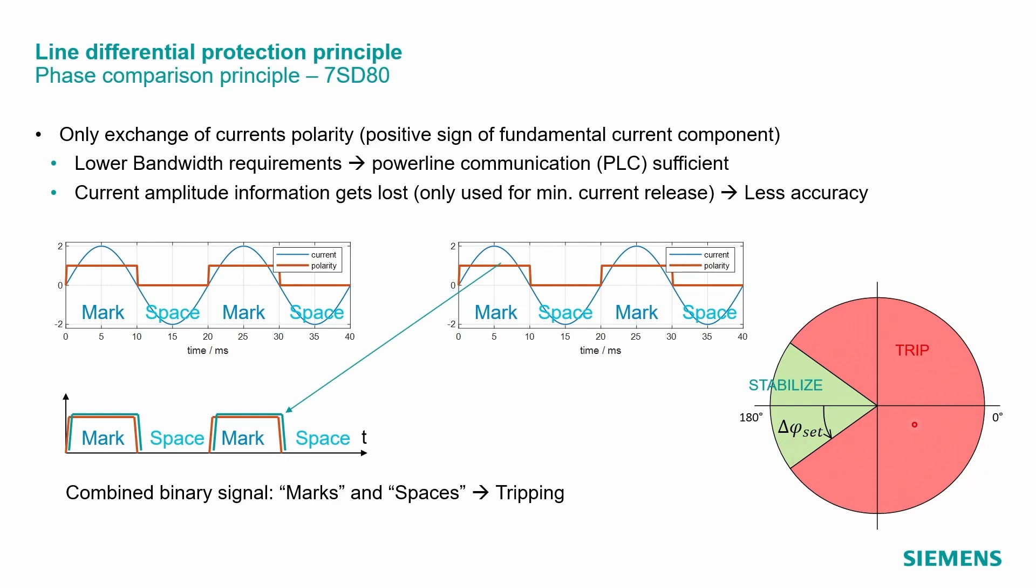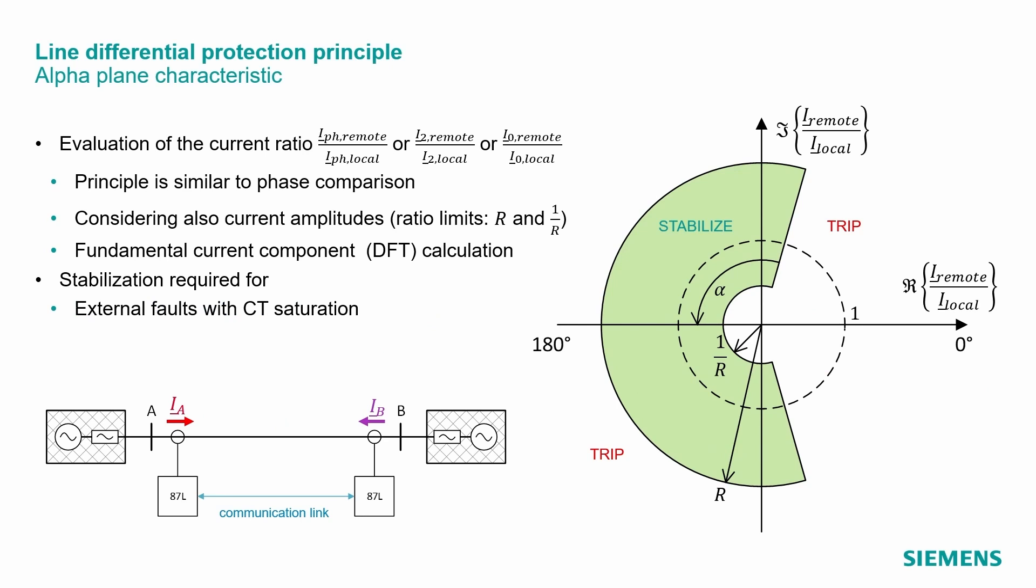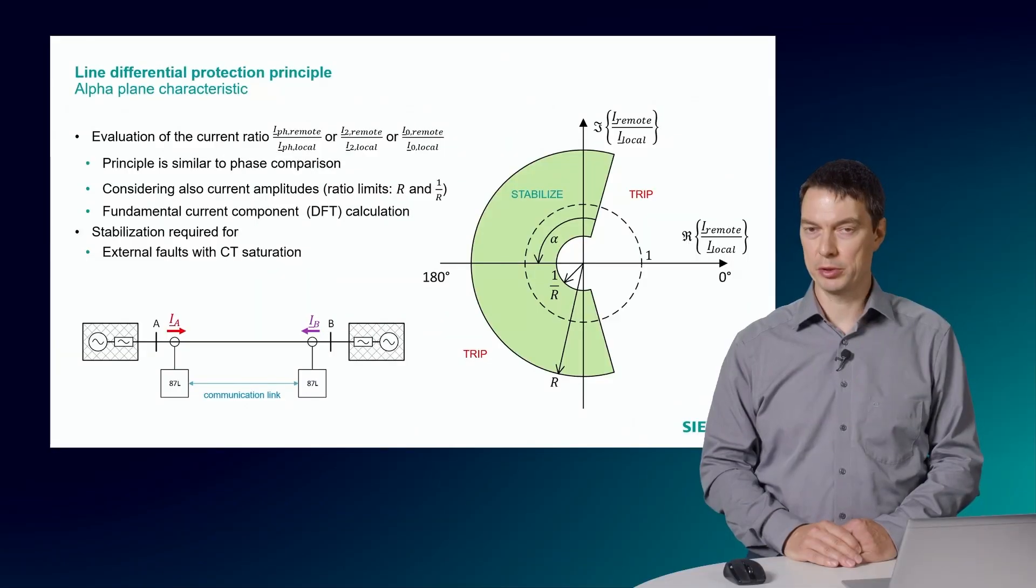The other region, the other sector, the relay will trip the circuit breaker. Not shown in this diagram is the effect of the minimum release current, which would result in a circular area around the region which would be stabilized.